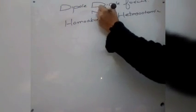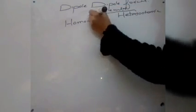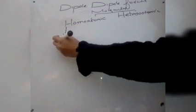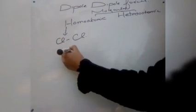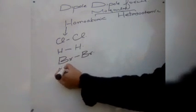Molecules are of two types: homoatomic molecules and heteroatomic molecules. Homoatomic molecules have similar types of atoms, like chlorine gas, hydrogen gas, and bromine. Many other types such as nitrogen, which has a triple covalent bond, are also homoatomic molecules.